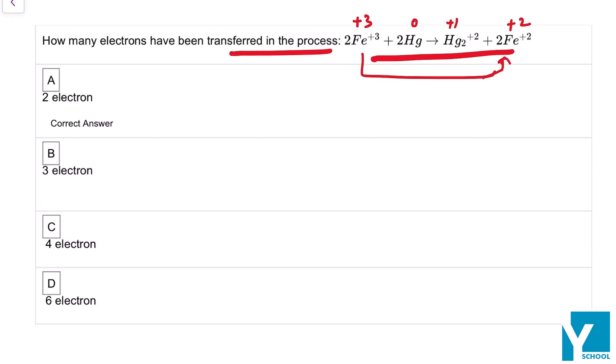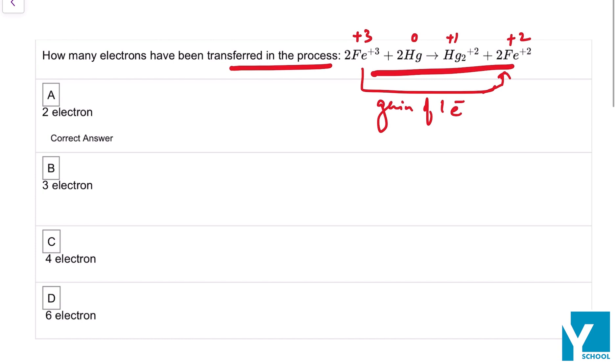So there is decrease in oxidation number and it is reduction, so there is gain of 1 electron. And here mercury is changing from 0 to plus 1, so there is basically the loss of an electron.